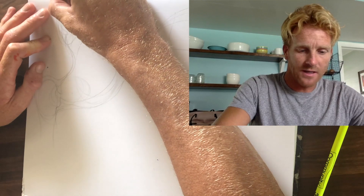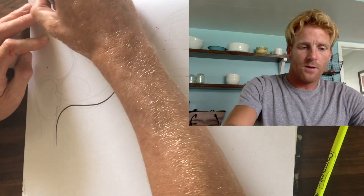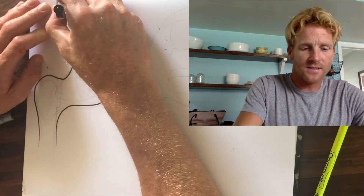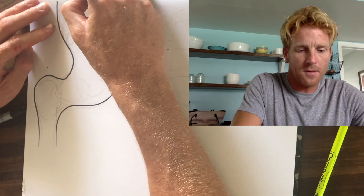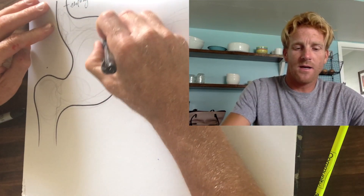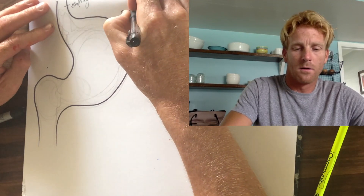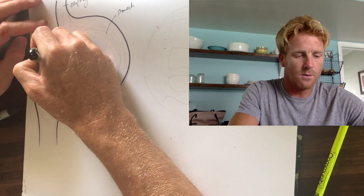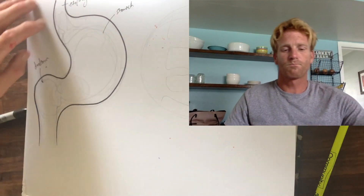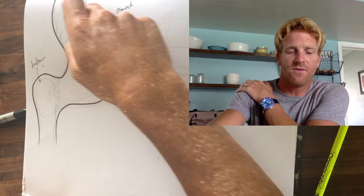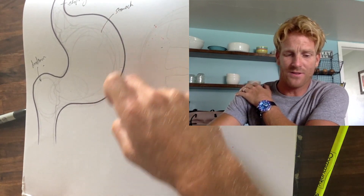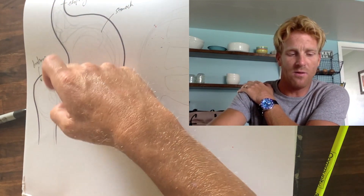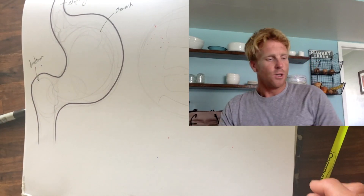As a quick anatomical review, the stomach connects to the esophagus up top, and then connects to the first part of the small intestine called the duodenum. Key parts include the fundus at the top, the greater curvature on the lateral side, the lesser curvature, the cardiac sphincter separating the stomach from the esophagus, and the pyloric sphincter separating the stomach from the duodenum.